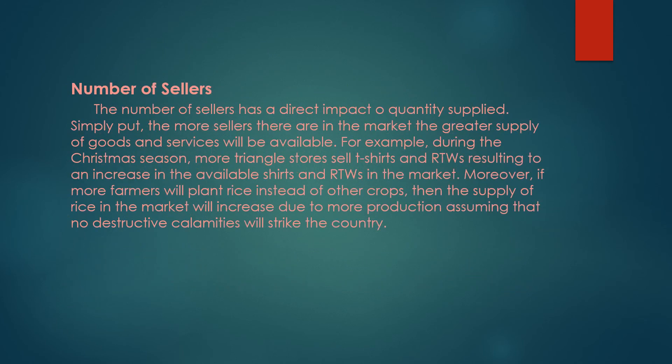Number of sellers: the number of sellers has a direct impact on quantity supplied. Simply put, the more sellers there are in the market, the greater the supply of goods and services available. For example, during the Christmas season, more stores selling t-shirts results in an increase in the available shirts on the market. Moreover, if more farmers plant rice instead of other crops, the supply of rice will increase due to more production, assuming no destructive calamities strike.